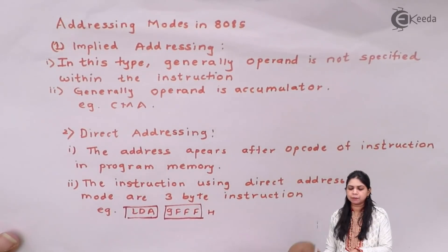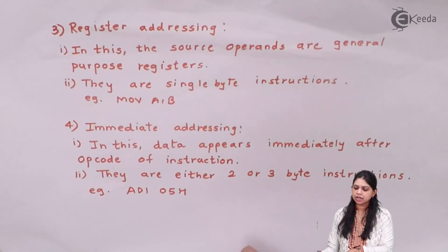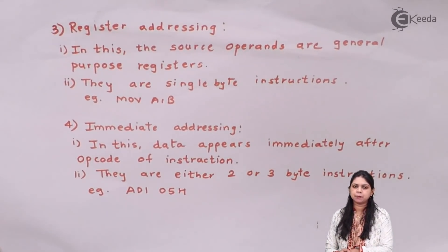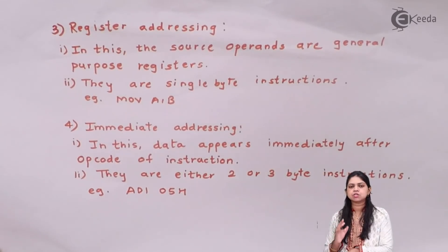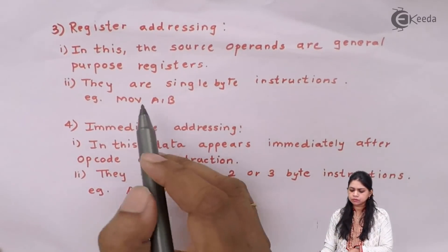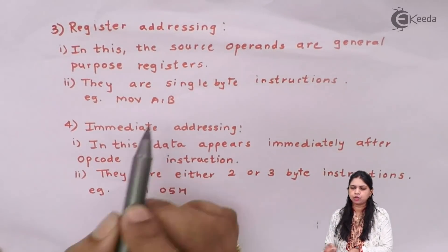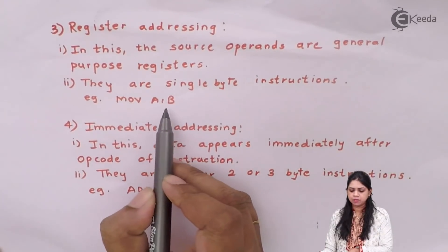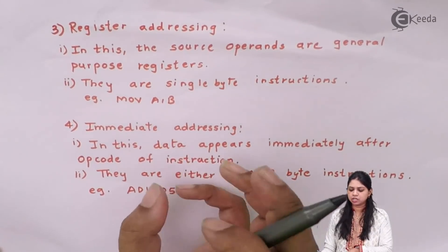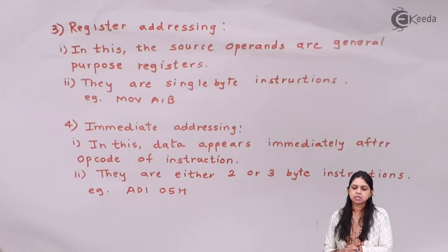Instructions using direct addressing mode are generally three bytes. For example, LDA takes one byte, and the address is two bytes, so altogether it is a three-byte instruction. Next we have register addressing mode. In register addressing mode, the source operands are general-purpose registers. When we transfer data from one register to another, the source operand is a register, so those instructions come under register addressing mode and are single-byte instructions.